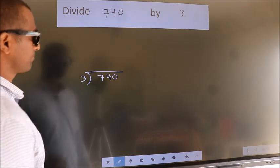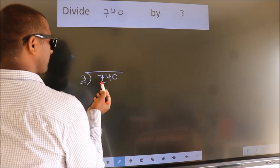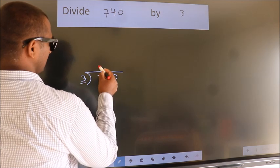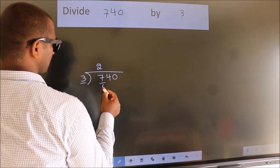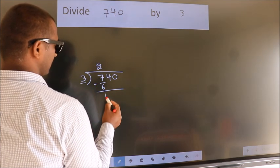Next, here we have 7, here 3. A number close to 7 in the 3 table is 3 times 6. Now we subtract. We get 1.